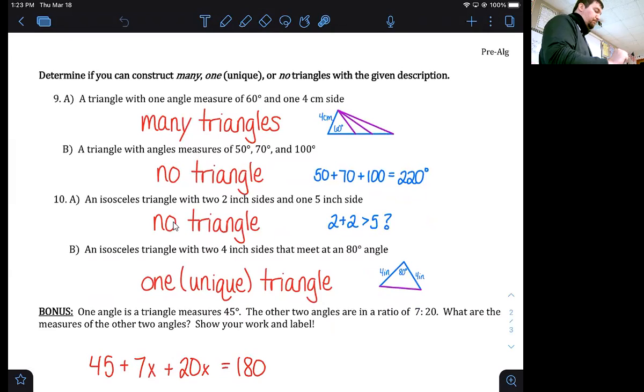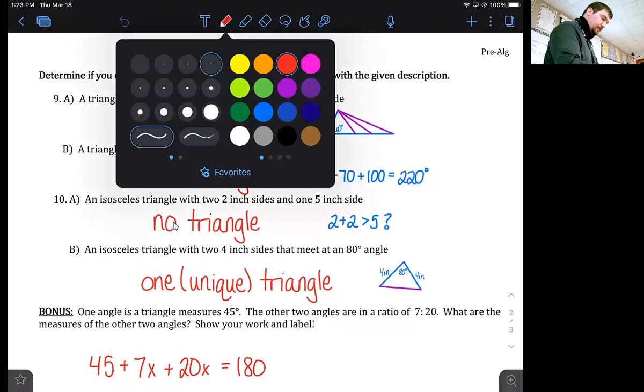Number 10 part A was no triangle. Now I had a lot of people putting one unique triangle because side-side-side, and I'd agree with you most of the time. The issue here is that the two shorter sides don't add up to be longer than the long side. So yes, you do have three sides and there is a theorem that says side-side-side is a unique triangle, assuming you have a triangle. We have no triangle here because the two short sides are too short.